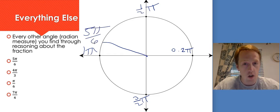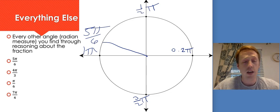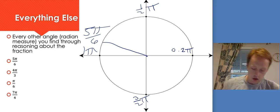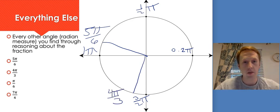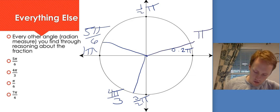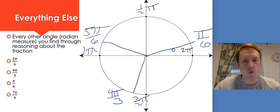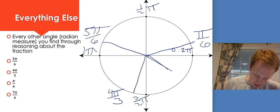For 4π/3, think about the fraction 4/3. Is it bigger or smaller than 1? 4/3 is bigger than 1 because 3/3 would be 1. Now, is it bigger or smaller than 3/2? You can find a common denominator, or think about the fact that 4/3 is 1 and 1/3, which is less than 1 and 1/2 — so it's right there. For π/6, think about 1/6 — definitely less than 1/2, so that's in quadrant 1. For 7π/4, think about 7/4 — bigger than 1, bigger than 1 and 1/2, and almost 2, so it should be right in the middle here.